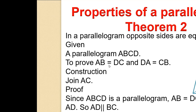Theorem 2: In a parallelogram, opposite sides are equal. Given parallelogram ABCD, to prove AB equal to DC and DA equal to CB. Construction: Join AC.